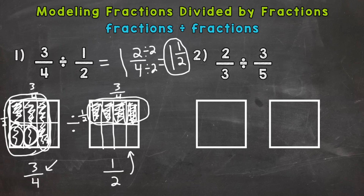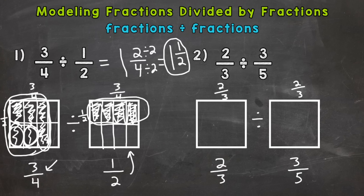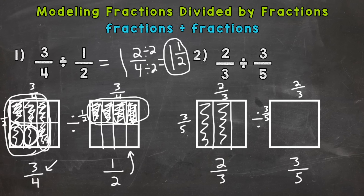Let's move on to number two, where we have two-thirds divided by three-fifths. The first square is going to be two-thirds and the second square is going to be three-fifths. This is a division problem. Two-thirds will be going vertically — up and down — and three-fifths is going to be horizontal. Let's represent two-thirds first, filling in two out of three, then split into fifths going horizontally — the denominator here tells us fifths.